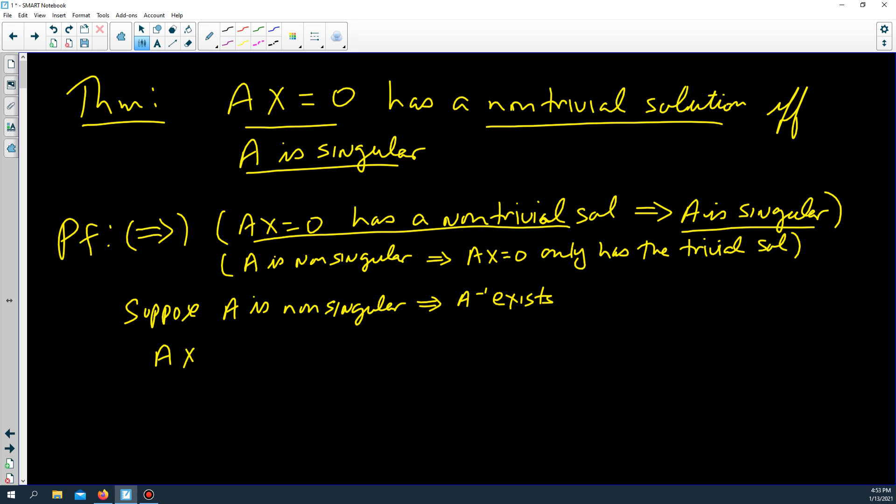Now, Ax equals 0. Yeah, so we're given if I multiply on the left side on both sides by A inverse because it exists.